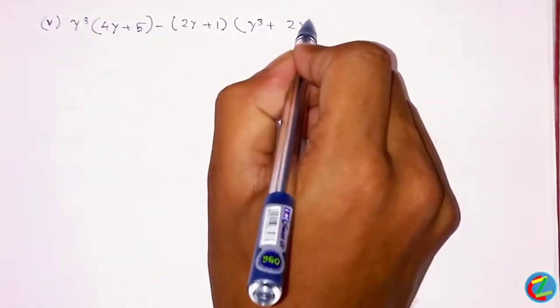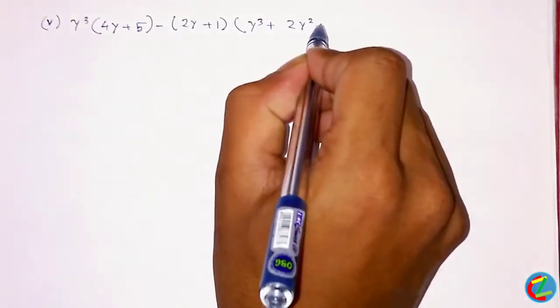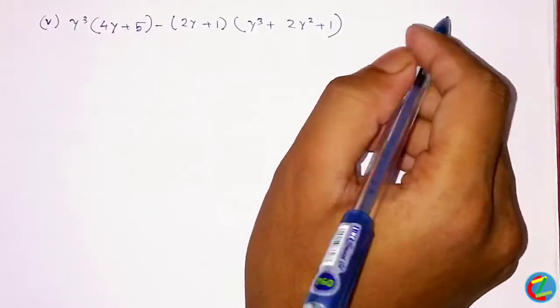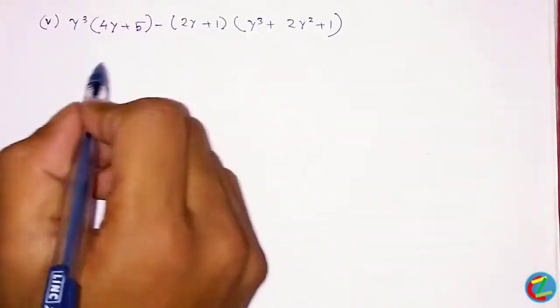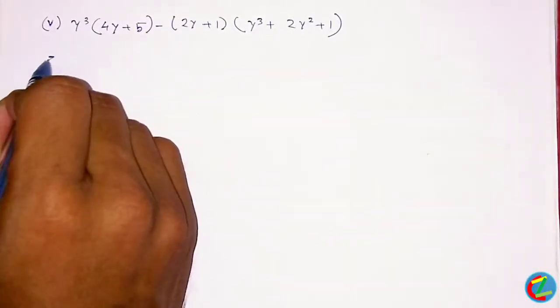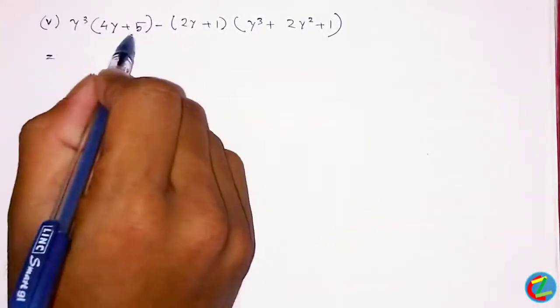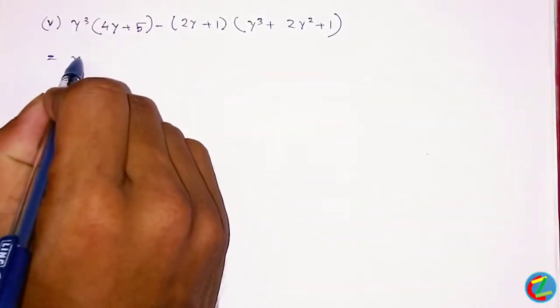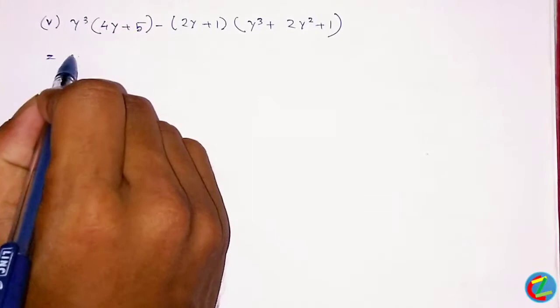What you do: 3 into 4y plus 5, full minus twice y plus 1, whole, plus twice y plus 1.